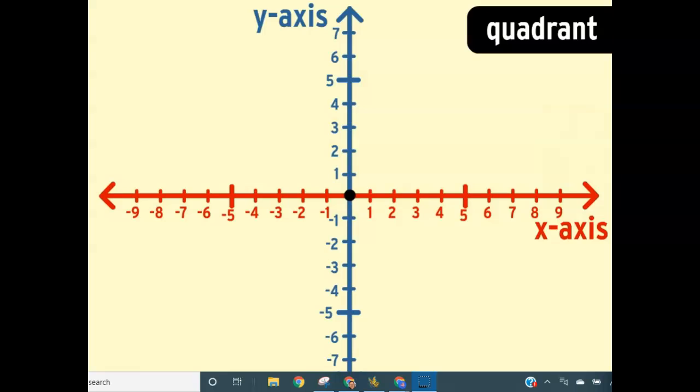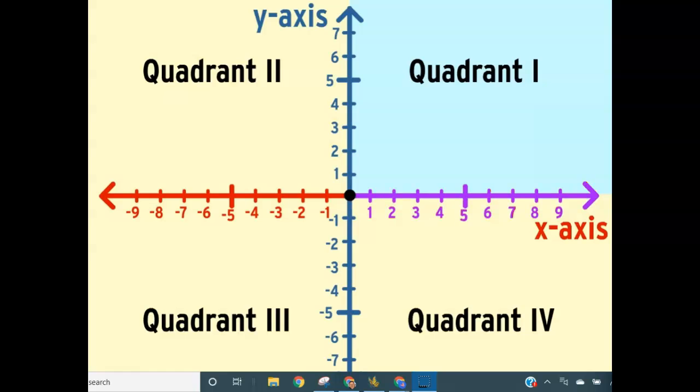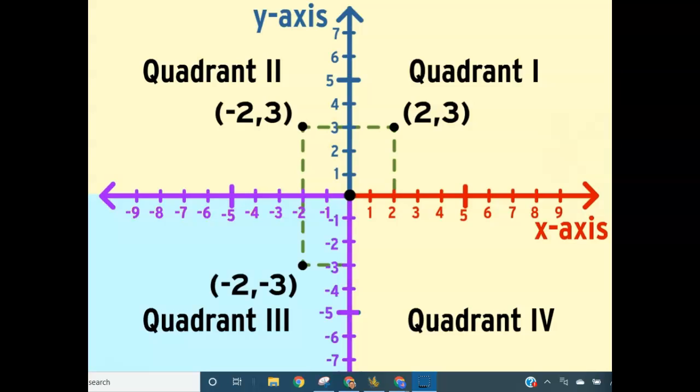Each section of the coordinate plane is called a quadrant because there are four of them. You can always predict what quadrant a point will fall in by looking at the positive and negative numbers. Quadrant one has all the points with a positive x-coordinate and a positive y-coordinate like two comma three. Quadrant two has all the points with a negative x-coordinate and a positive y-coordinate like negative two comma three. Quadrant three has all the points with a negative x-coordinate and a negative y-coordinate like negative two comma negative three. And quadrant four has all the points with a positive x-coordinate and a negative y-coordinate like two comma negative three.